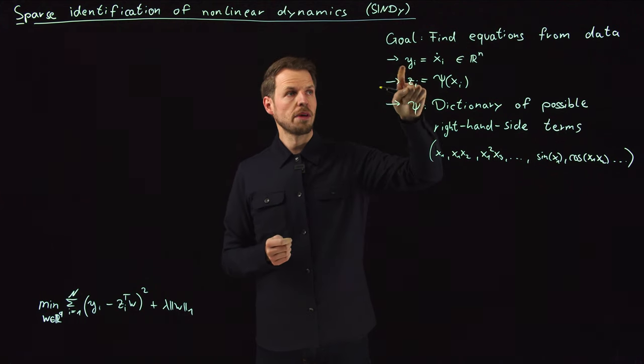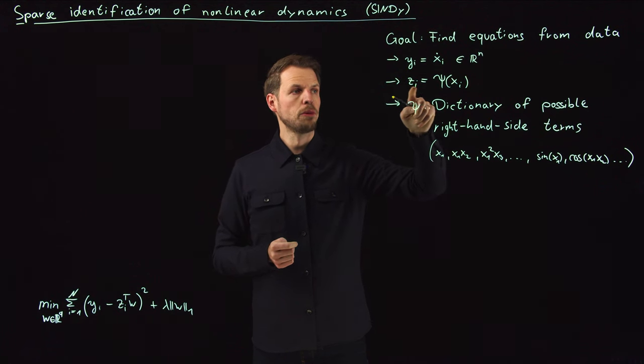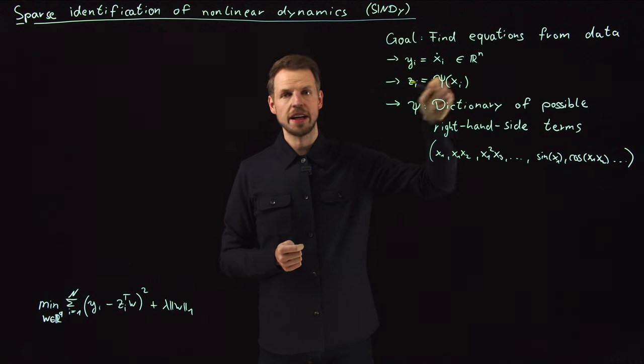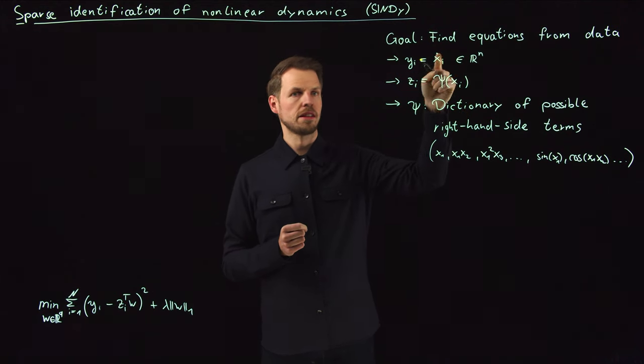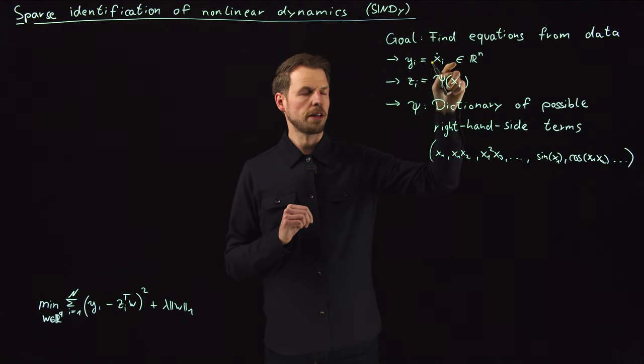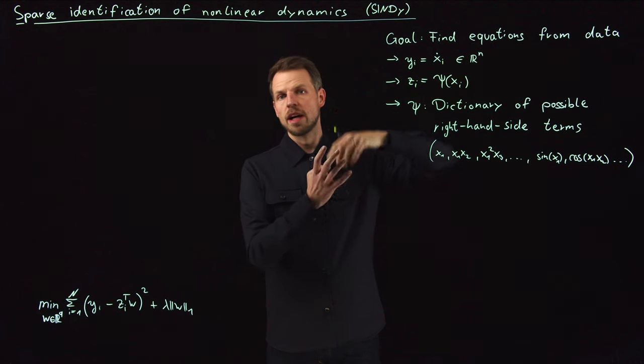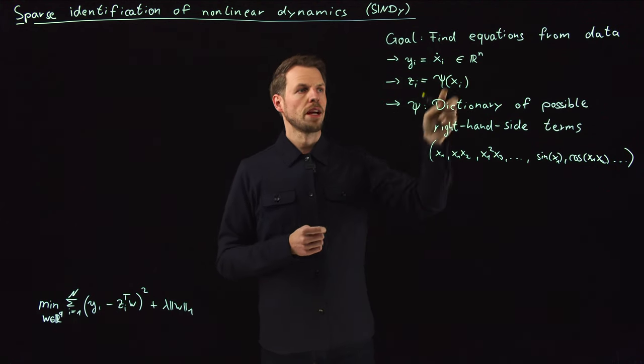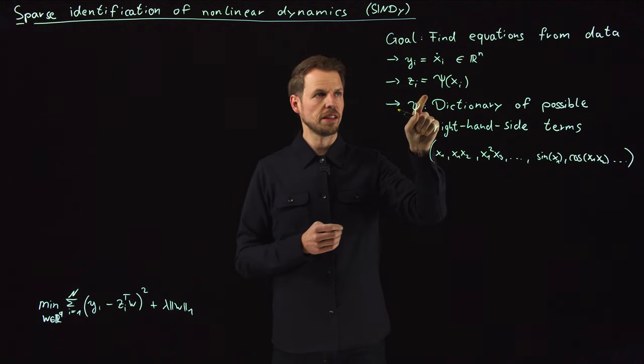All you have to do, really, is you say my output is X dot, and my input is Psi of Xi. I'm considering the system state and the time derivative, and this Psi is a dictionary. I'm lifting my input, so the system state, n-dimensional, to a higher dimensional feature space, and my output is the X dot.